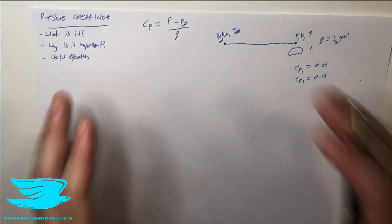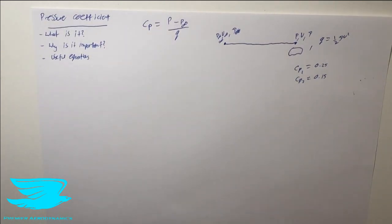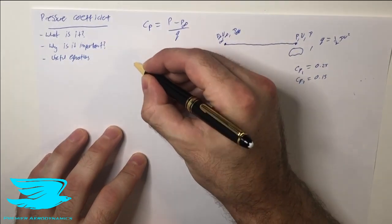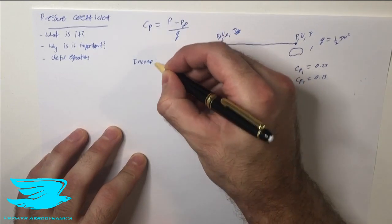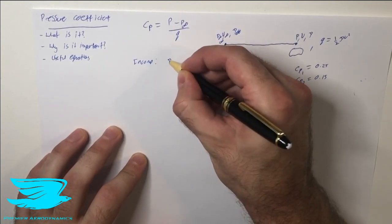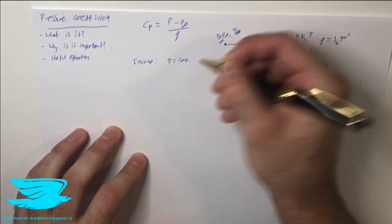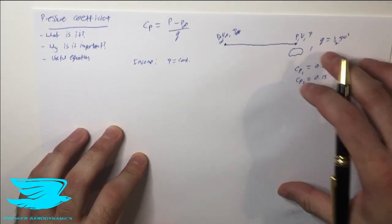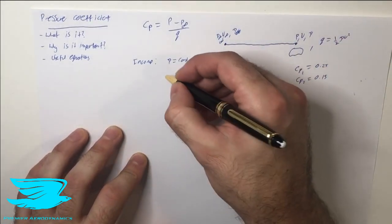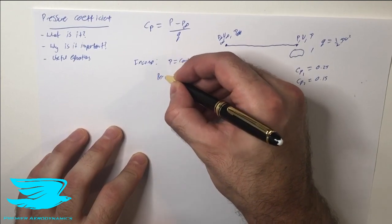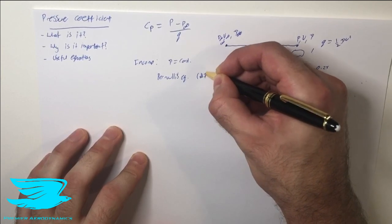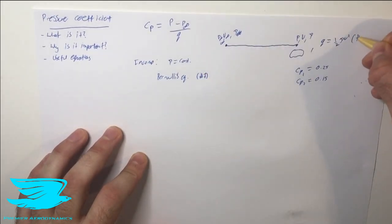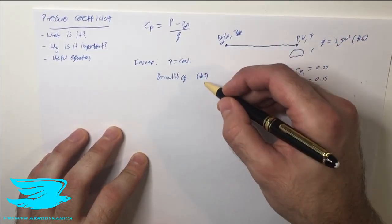So that's what the pressure coefficient is. Now why is it important? For incompressible flow, for example, we get some pretty cool equations we can use. In incompressible flow, the density is constant, so no matter where you are in the flow the density will be the same. So we can now use Bernoulli's equation — check out video number seven for that, and video number six for dynamic pressure.